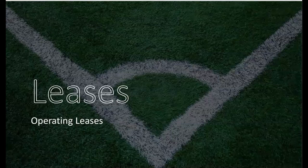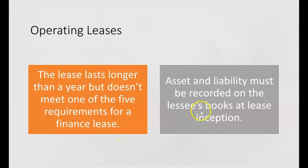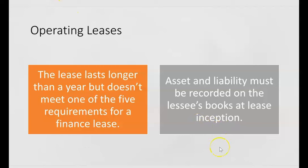Let's look at operating leases. With an operating lease, the lease lasts longer than one year but doesn't meet one of the five requirements for a finance lease. Even though it doesn't meet finance lease requirements, the asset and liability must be recorded on the lessee's books at lease inception — the lessee being the tenant, the lessor being the landlord. Since this chapter is about liabilities, we're talking only about the lessee's books.